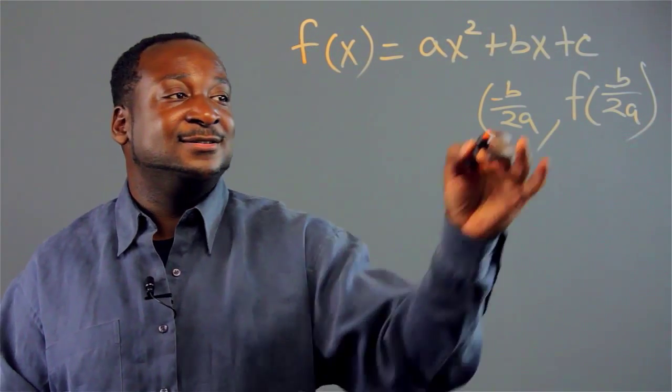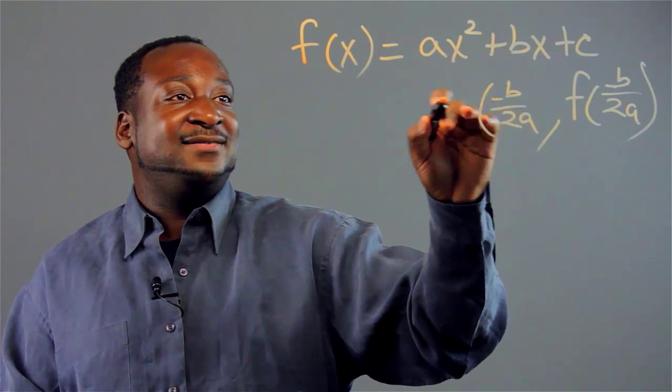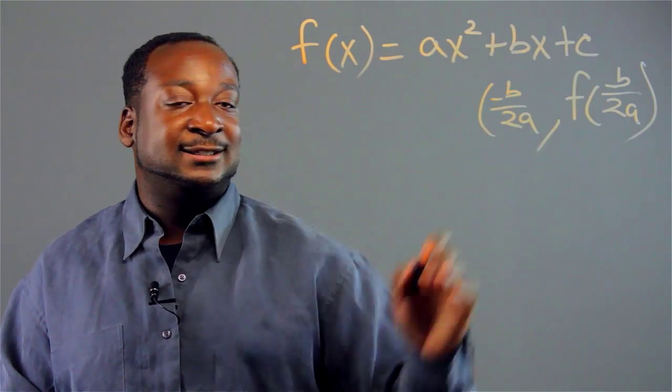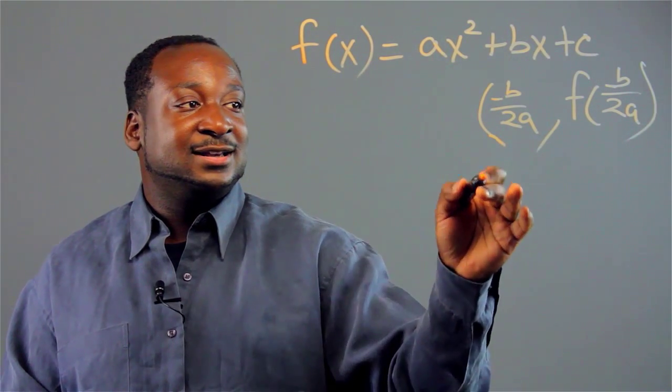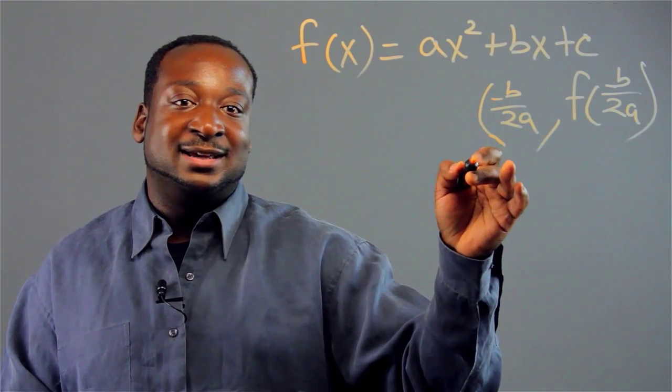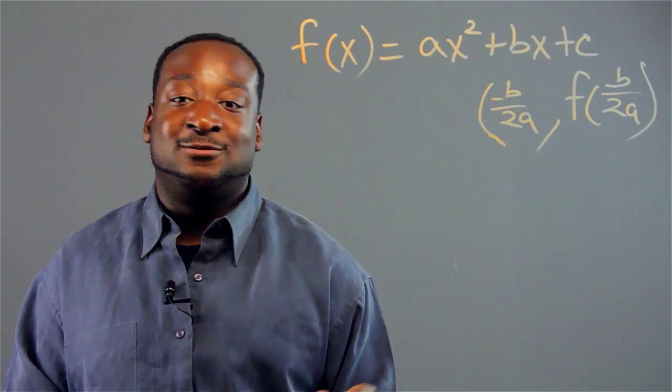So we have the coefficients a, b, and c. And the vertex is an arithmetic operation on the two coefficients.